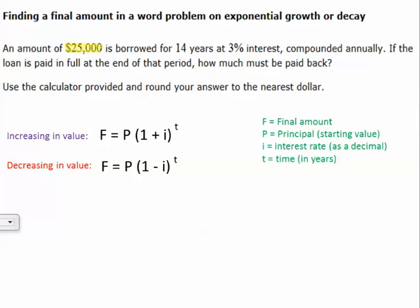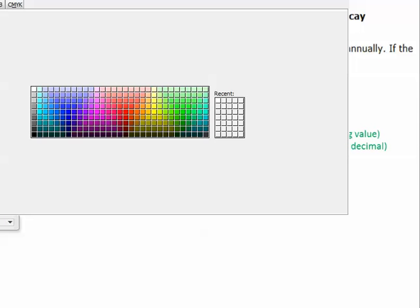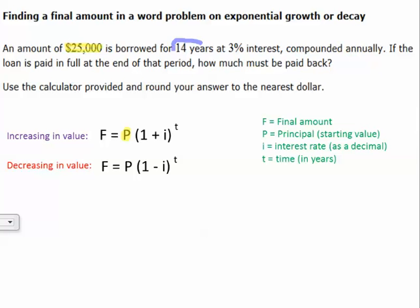So let's identify our information here. $25,000 is the amount that we're borrowing. This is our P. Then it says we are borrowing it for 14 years, so this is going to be our time. And then, we have a 3% interest rate here. And so we know that our interest rate, i, has to be converted to a decimal. So 3% we know is the same thing as the fraction 3 out of 100, because percent is always out of 100, which means that 3% is the same as the decimal 0.03. So our i is going to be 0.03.